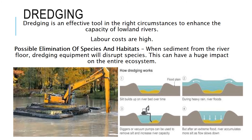Dredging essentially means digging out sediment that builds up in rivers over time — including debris, shopping trolleys, and rubbish. By digging the sediment out, you increase the capacity of the river so it can carry more water. Issues: labour costs are quite high, it requires highly qualified and trained people, and you will invariably damage ecosystems, as this fertile sediment is very important for natural habitats and the animals and plants that rely on it.